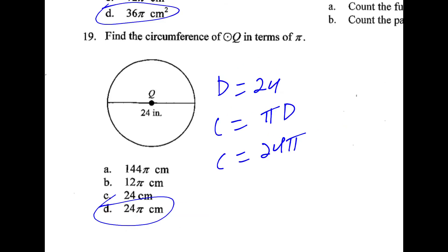19, they give us the diameter and the circumference is pi times the diameter. So that's just 24 pi.